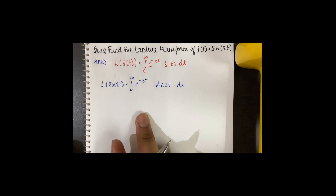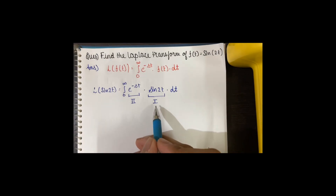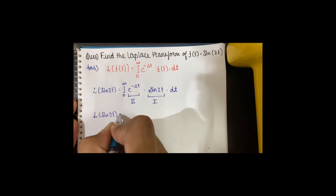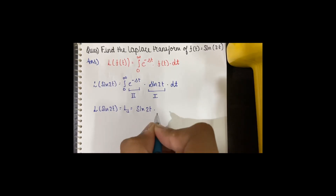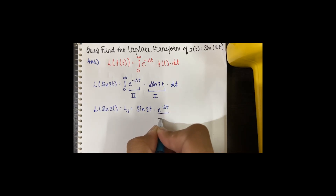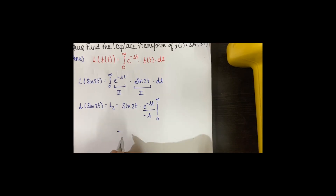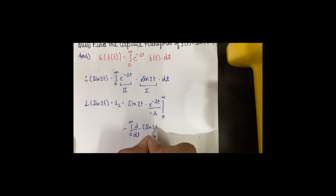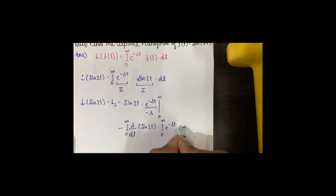Now we have to solve this integral using the integration by parts method. Following the standard convention, we consider e to the power minus st as part 1 (u) and sin 2t as part 2. Let's denote the Laplace of sin 2t as LS for convenience. Applying by parts gives us sin 2t times e to the power minus st divided by minus s, evaluated from 0 to infinity, minus the integral from 0 to infinity of the derivative of sin 2t times e to the power minus st, which yields cos 2t dt.